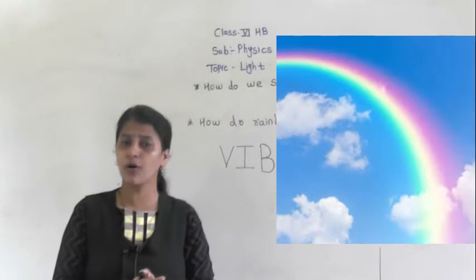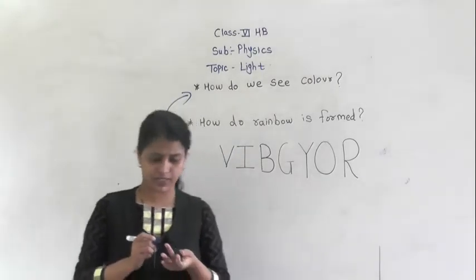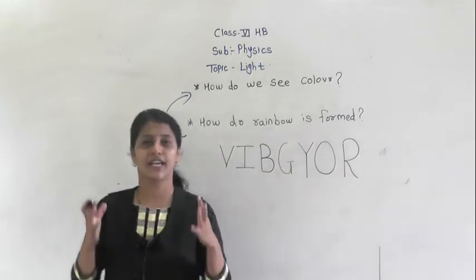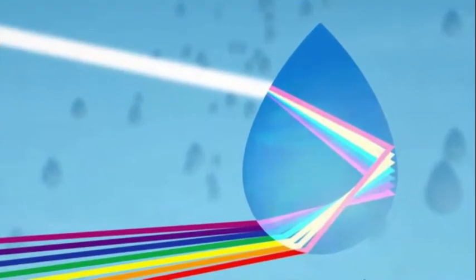You might have seen the rainbow. How is the rainbow formed? The rainbow is formed when sunlight and rain combine in a very specific way. The beam of sunlight separates the light into 7 different colors. Rainbow is formed only during the rainy season.